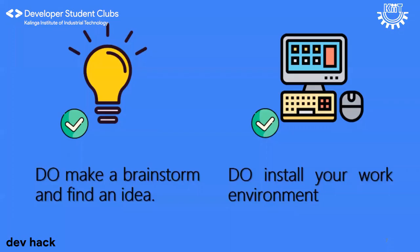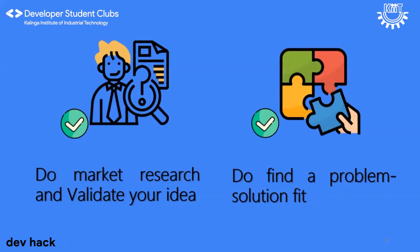Now let's talk about some positives. The first do is to brainstorm and find an idea. Generate as many ideas as possible on the given topic, then strain out the best ideas you can implement within the given timeframe. Make feature prioritization and define the minimum set of features needed for presentation. Try to build the initial prototype and give tasks to each member. Do install your work environment and get ready with all the tools and necessary things. Do market research and validate your idea.